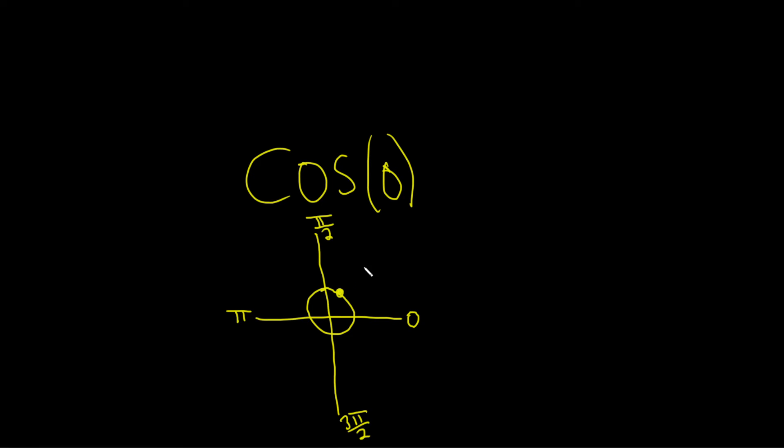The key is that on the unit circle, every single ordered pair has the form cosine theta comma sine theta. We're interested in the angle zero, which is right here. So we're interested in this ordered pair here.